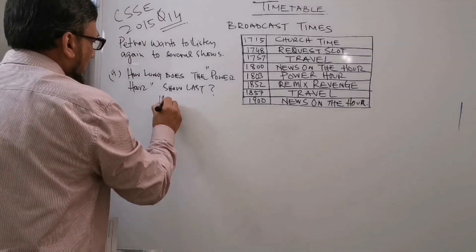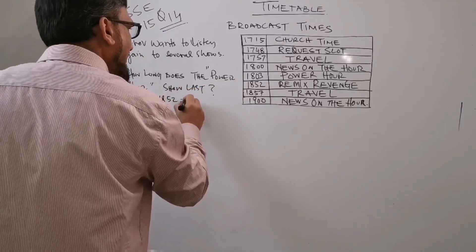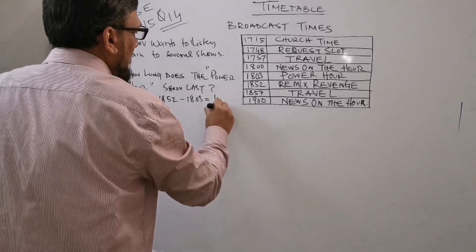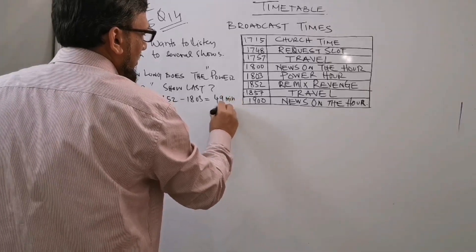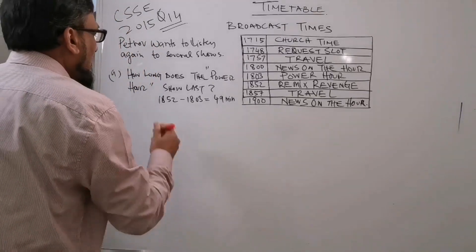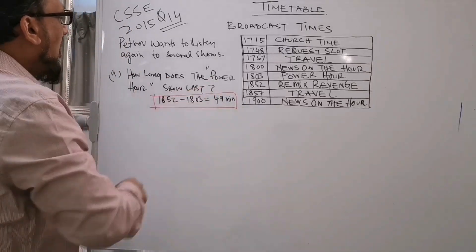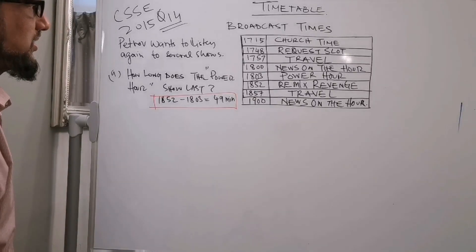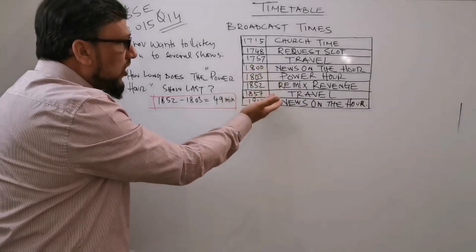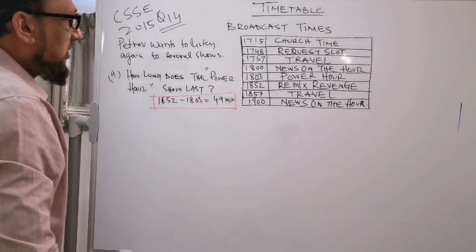So very simply, you need to take away 1803 from 1852. You get the minutes of how long the Power Hour lasts. 1852 take away 1803 equals 49 minutes. So the answer for part A is 49 minutes. The Power Hour starts at 1803, the end time is 1852 when the next program starts, so it lasts 49 minutes.